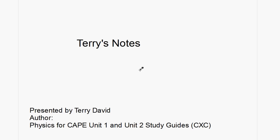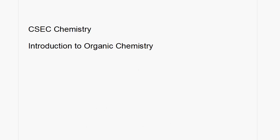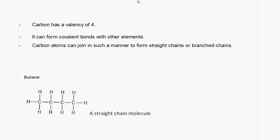Welcome to another episode of Terry's notes. Today we're going to look at an introduction to organic chemistry. Carbon has a valency of four. It can form covalent bonds with other elements. Carbon atoms can join in such a manner to form straight chains or branched chains.